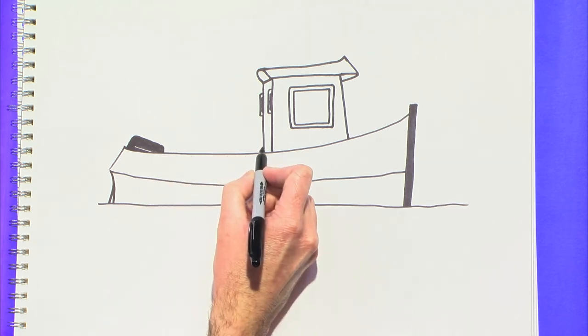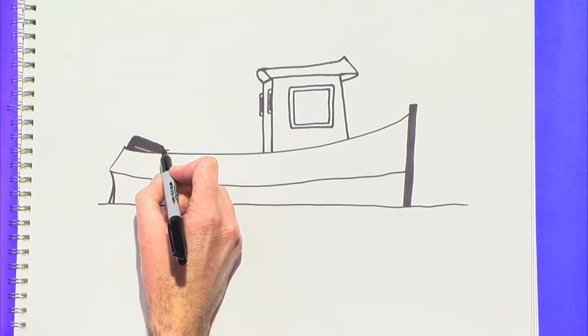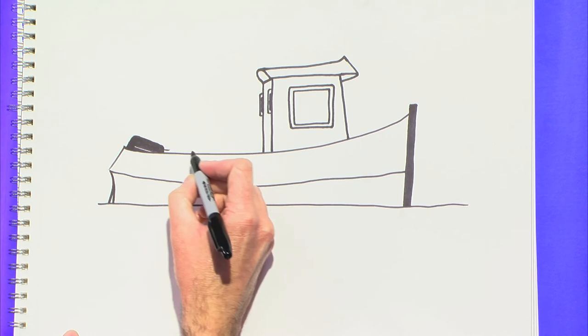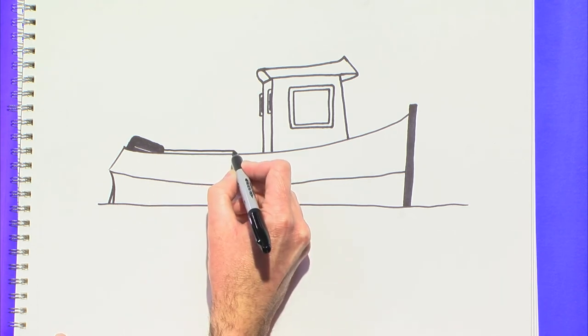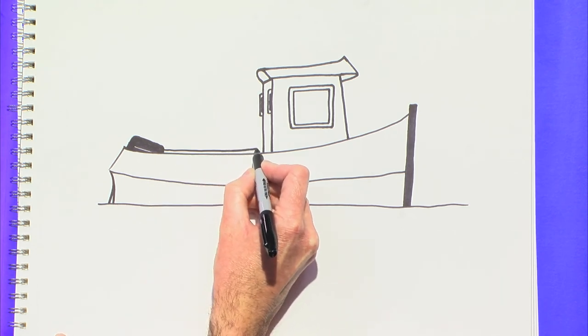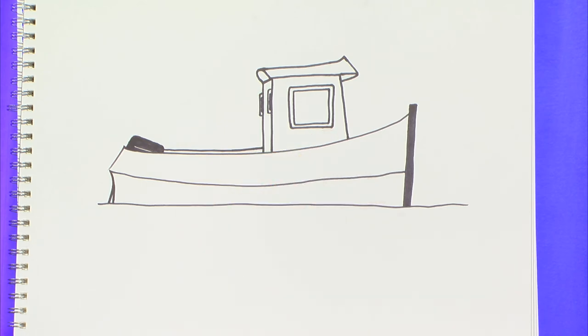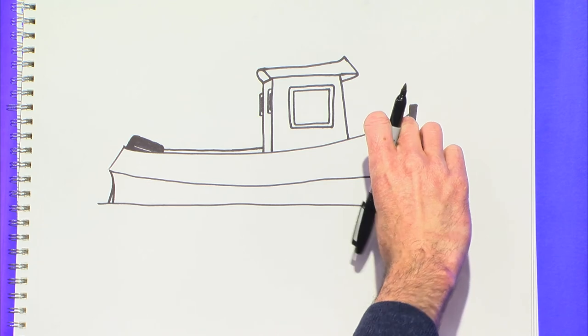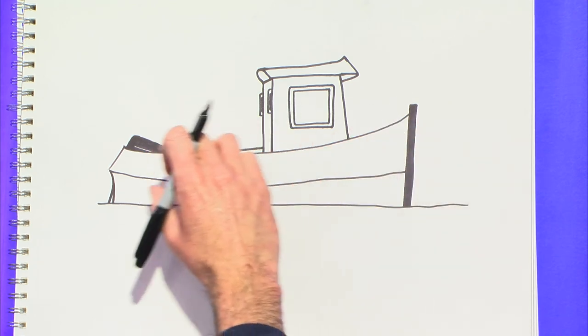I'm going to make another line right here that's going to run parallel to the first line that we made. This is going to be, again, just giving it three dimensions. This is the other side of the boat. So what we drew first was the starboard side, so now we're drawing the port side back there.